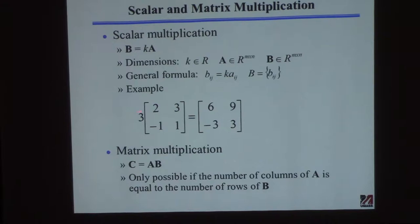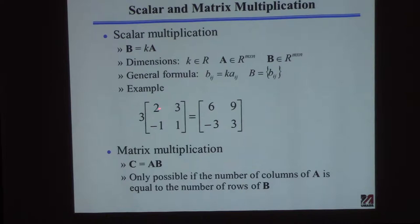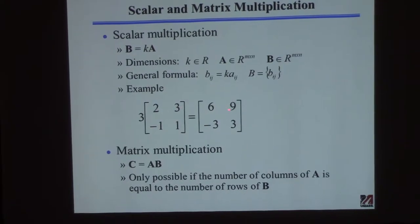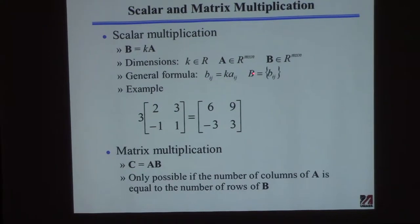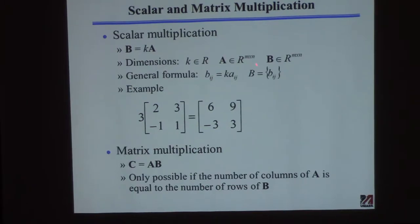So if you want the 1,2 element of B, you take K and multiply it times the 1,2 element of A, which gives you 9. That tells you how to find all the elements of B — for every possible combination of I and J, you just put them in a matrix. B is a matrix comprised of all those elements.